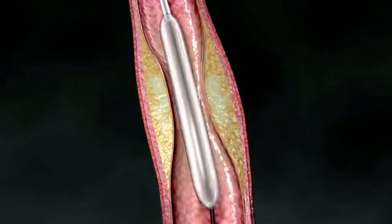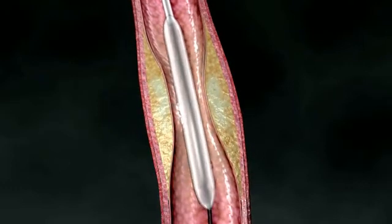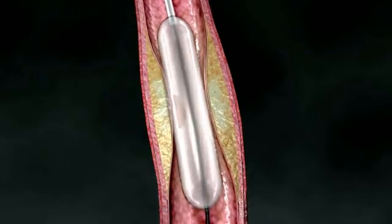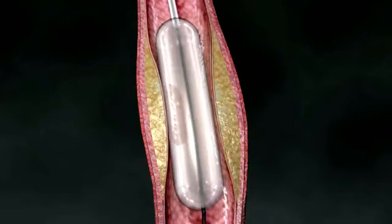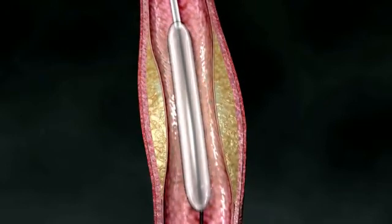When the catheter reaches the blockage, the balloon is inflated, pushing the artery open and widening the blood vessel enough to increase the flow of blood and nutrients to the heart.